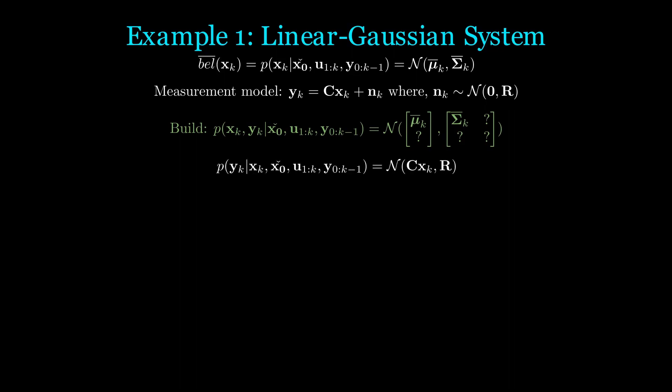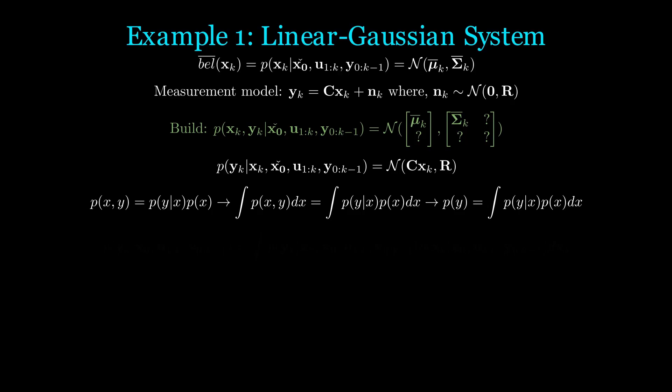P(y|stuff) is more complicated. First, we can see that P(y|x, stuff) is just a Gaussian with mean Cx and covariance R. Let's take a slight detour. We know P(x,y) = P(y|x)P(x). If we marginalize according to x on both sides, we can find that P(y) is the integral of P(y|x)P(x)dx. Hence, P(y|stuff) is this integral here.